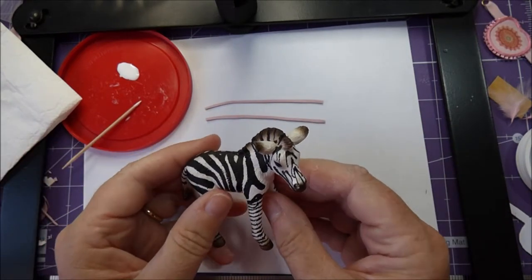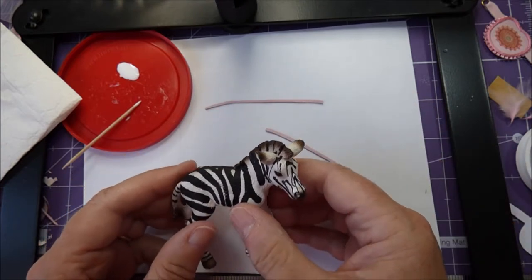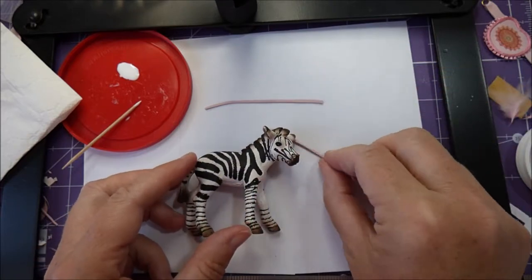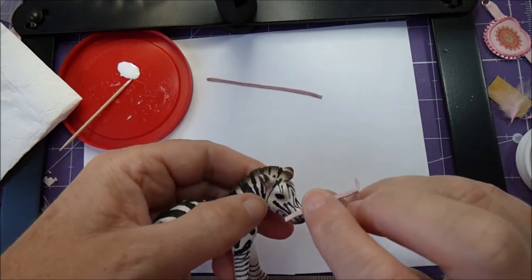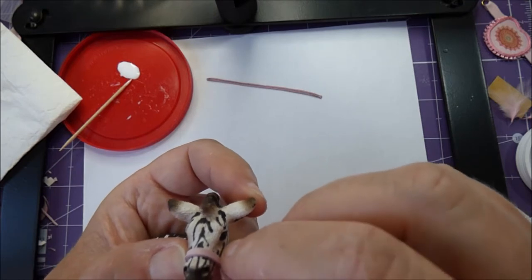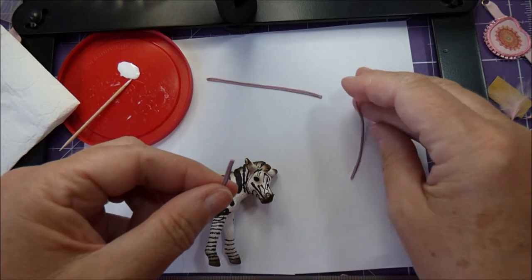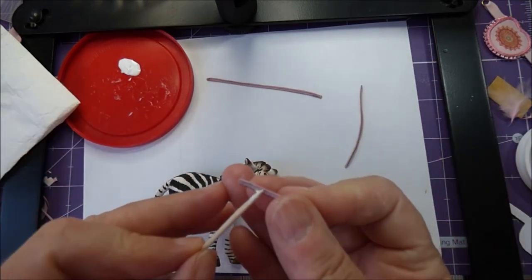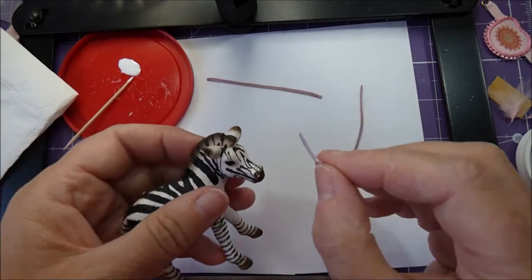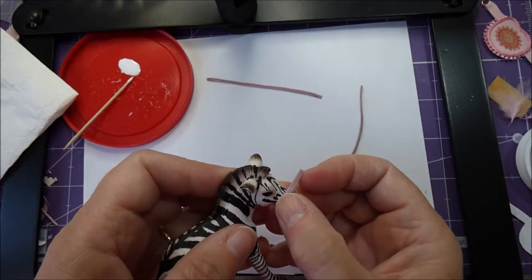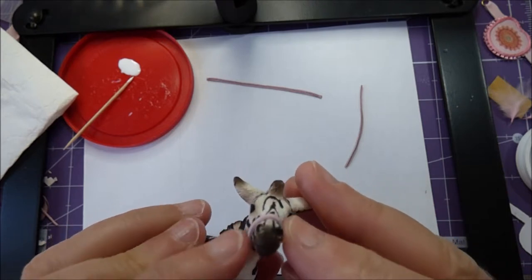Now we're going to add the head harness and the reins to the zebra. The two thin strips of leather that you have cut out from the leather piece, we're going to use them to make first of all the head harness. Measure from one side of his mouth to the other across the top of his nose. Cut that piece to length. Apply some glue onto the back of it and then position it onto his nose.